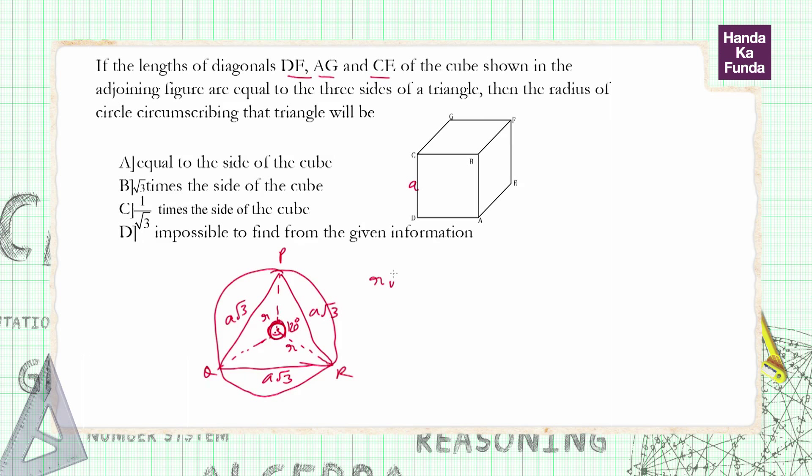We know that r√3 equals a√3, which essentially means r equals a. Therefore, the radius of the circle circumscribing that triangle will be equal to the side of the cube, which is option A. Thank you.